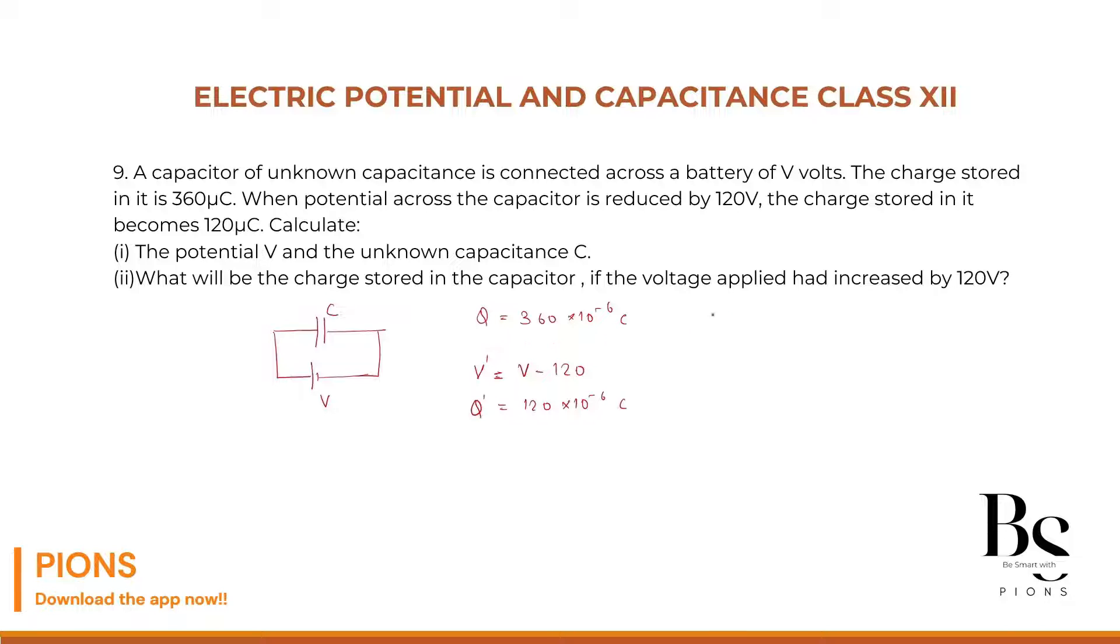What is our C value from the first one? Let me remind you the formula: Q equals CV. This is our relation for a capacitor. What is our capacitance in the first case? It will be C which equals Q by V. Let's substitute the value here: 360 into 10 to the power minus 6 whole divided by voltage V. This is our equation one.